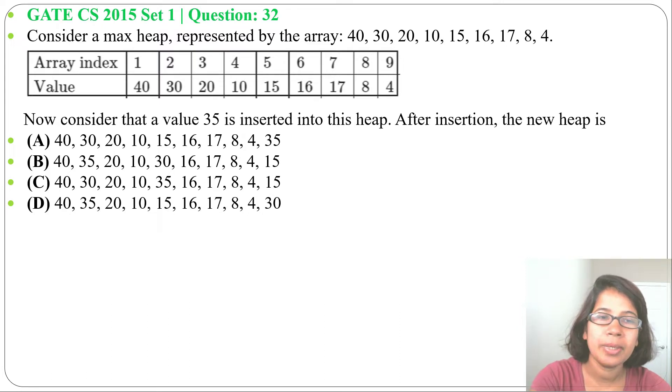The array indices will be 1, 2, 3, 4, 5, 6, 7, 8, 9. Now consider that the value 35 is inserted into this heap. After insertion, the new heap is given in four options. We'll insert 35 as the last node. Let index 10 be where 35 will be placed.